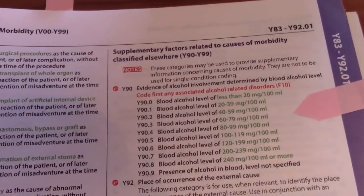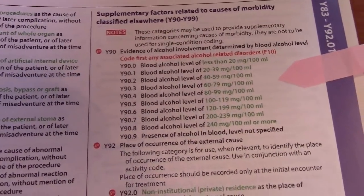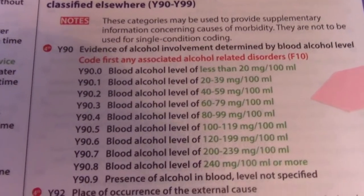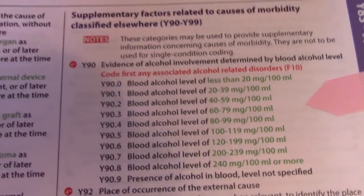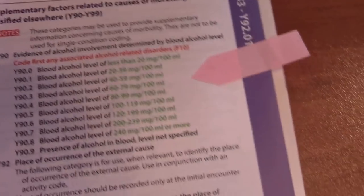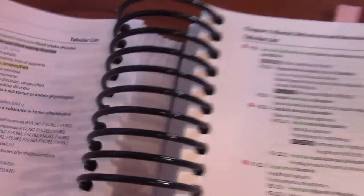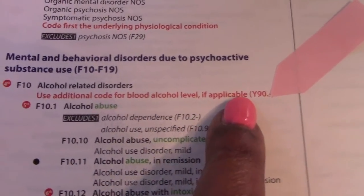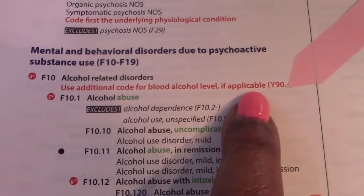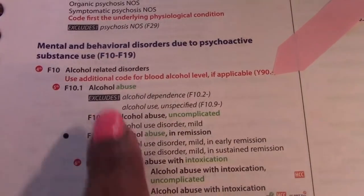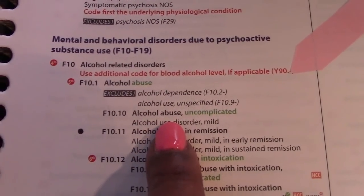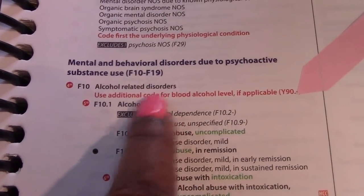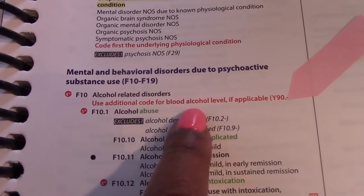Another example is with alcohol. If a person comes in intoxicated, you have to capture the blood alcohol levels — the Y90 category captures that. When you go to code F10, which is alcohol-related disorders, there's a note that says 'use additional code for blood alcohol level, if applicable.' So if you can find lab work in the patient's chart showing the blood alcohol level, you use an additional code — even though your physician diagnosed the patient with alcohol abuse or any F10 related conditions.